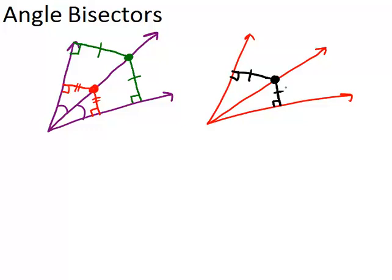that means that this original line must be the angle bisector. So in other words, if these things that I've marked are true,